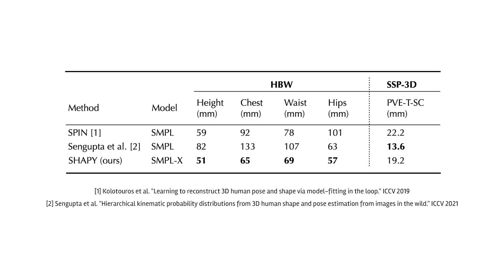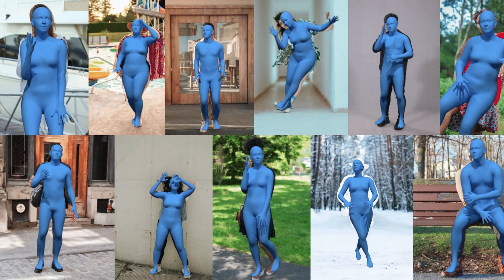ShapeY is significantly better than state-of-the-art on HBW. Our results also show that silhouettes are a good approach for minimal or tight clothing. The key takeaway is that linguistic descriptions of body shape are sufficient to train a metrically accurate 3D body shape regressor. Maybe we can use language beyond human bodies for learning 3D shape from images. Thank you for listening.